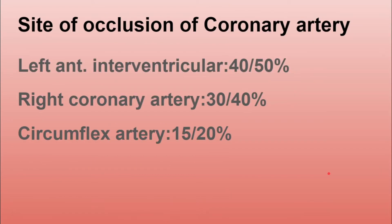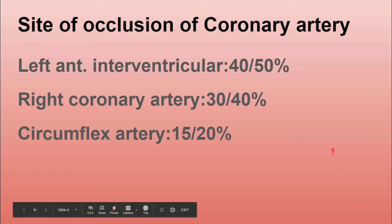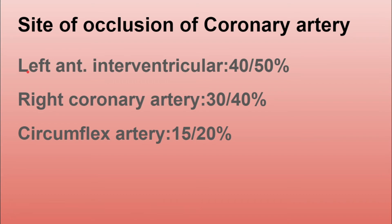Now, what are the sites of occlusion of the coronary artery? We have many coronary arteries and their branches. The artery with the maximum blockage rate is the left anterior interventricular artery, a branch of the left coronary artery, with about 40–50% risk. The right coronary artery has a risk of about 30–40%, and the circumflex artery, also a branch of the left coronary artery, has a risk of around 20%. The maximum rate is for the left anterior interventricular artery.